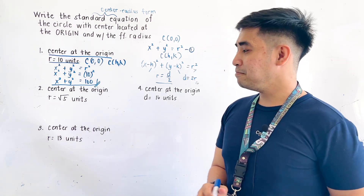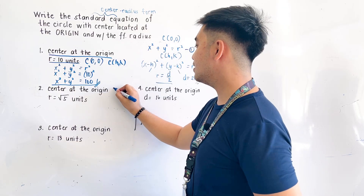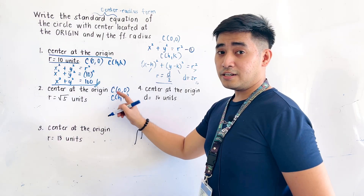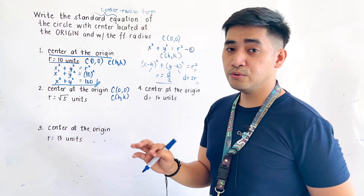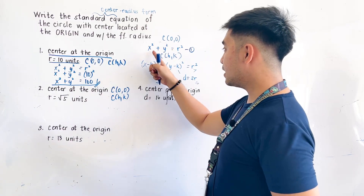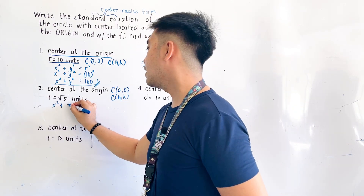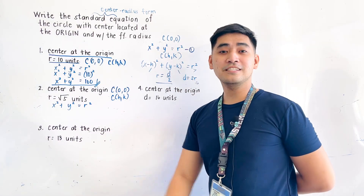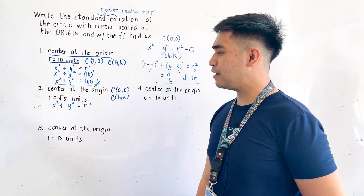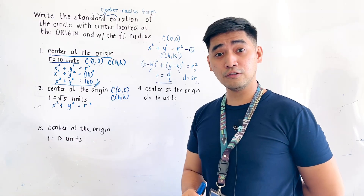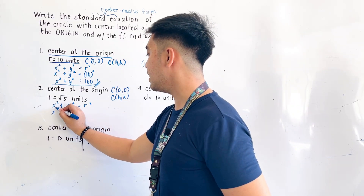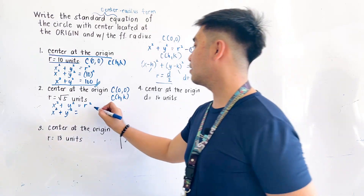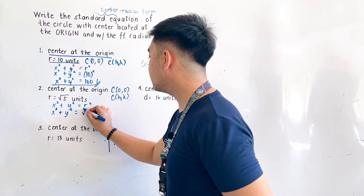For the second problem, the center is at the origin, point (0, 0), so H is zero and K is zero. We use the formula x squared plus y squared is equal to r squared, where r is equal to the square root of 5 units. Substituting, x squared plus y squared is equal to the square root of 5, quantity squared.